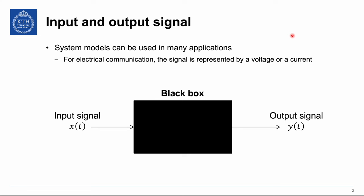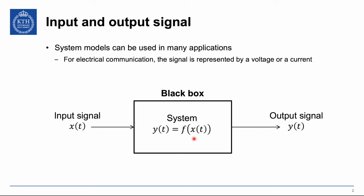When we work with systems it's all about having a black box that takes an input signal and produces an output signal. System models like this can be used in many different applications. In electrocommunication the signals might be some kind of voltages or currents processed by a box providing some output. We often write the signals x of t and y of t as something dependent on time, and the box is exactly what we call a system. It can be a function that takes the input and produces the output, and the question is what kind of properties this function might have.